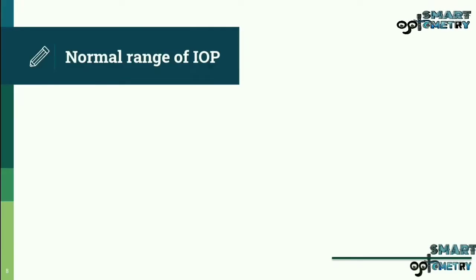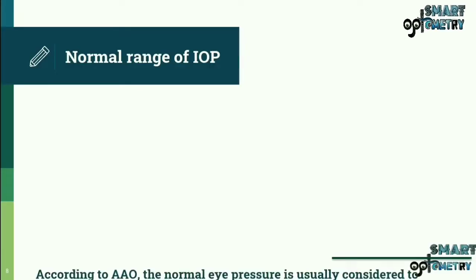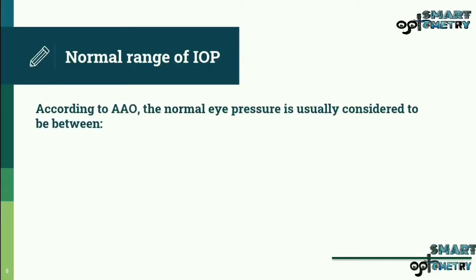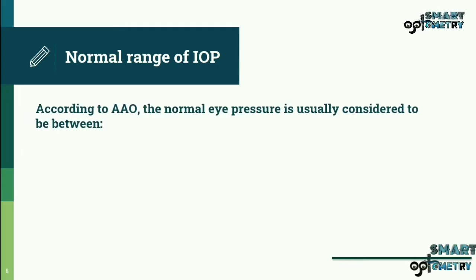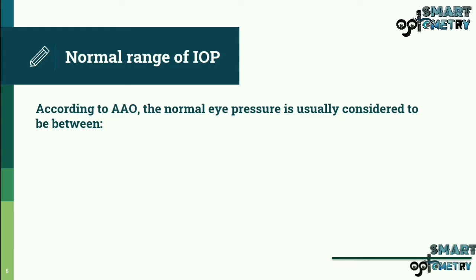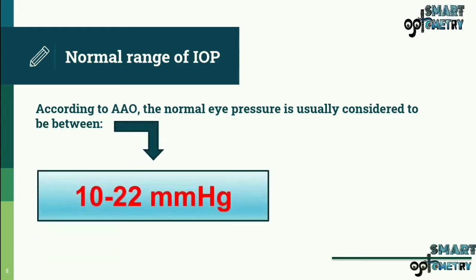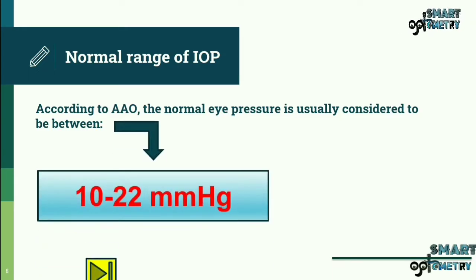Normal range of intraocular pressure: according to the American Academy of Ophthalmology, the normal eye pressure is usually considered to be between 10 to 22 mmHg.